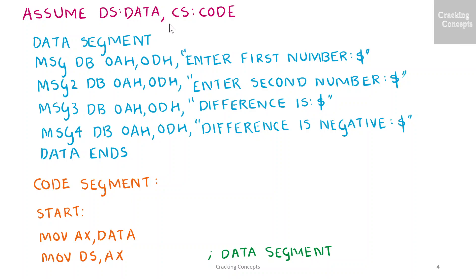The first statement informs the assembler the logical names given to different segments of the program, which are data and code for the data segment and code segment respectively. Then we begin with the data segment where we have four labels to display strings in order to enter the numbers and display their results.